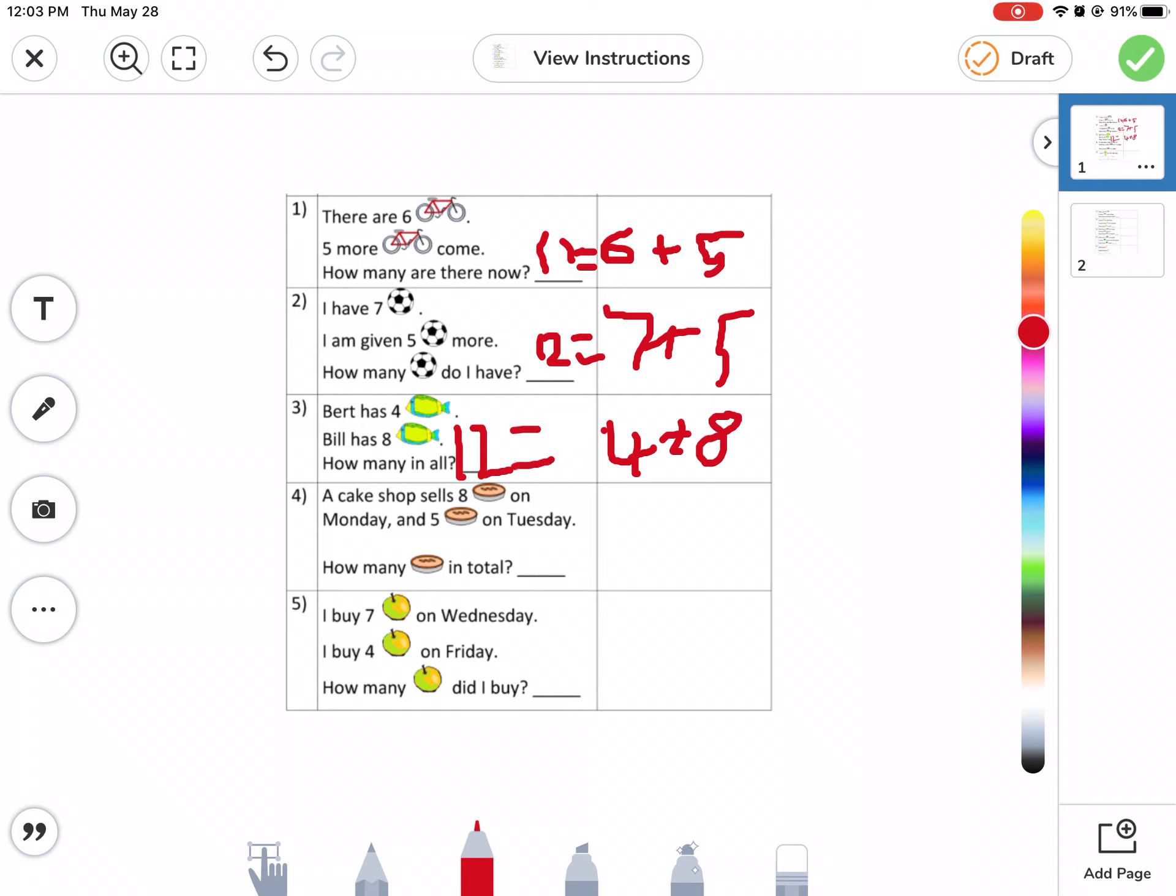All right. Here a cake truck sells eight pies on Monday and five on Tuesday. How many in total? Okay.